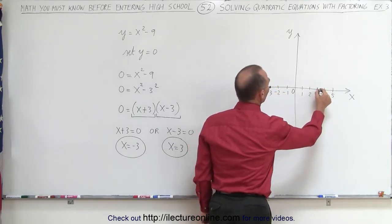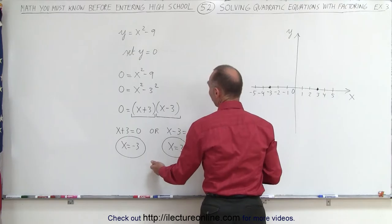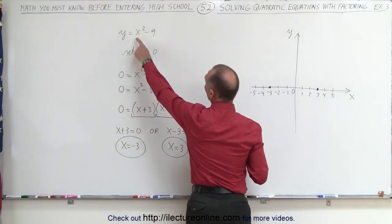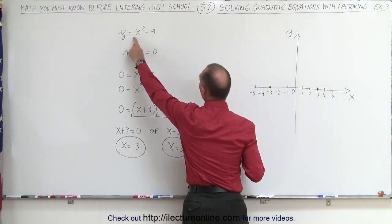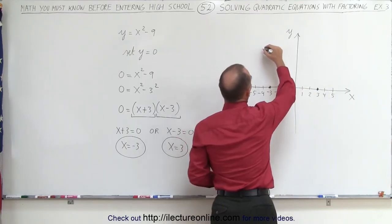In this case, x equals negative 3, and in this case, x equals 3. So, it does look like there's two places where the graph will cross the x-axis.